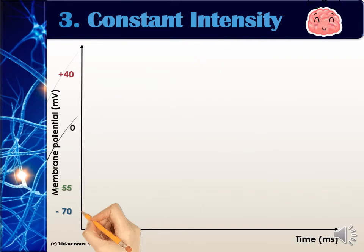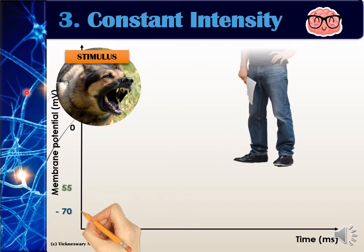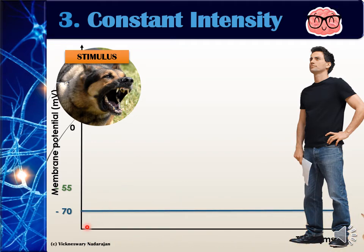Let's move to the third characteristic: that the potentials for an impulse are constant. Let's take the dog barking as a stimulus. If you don't notice the dog barking, that means there is no stimulus and your resting potential will maintain at negative 70 millivolts. It won't fluctuate and go down to negative 90 or up to negative 64 — it will stay and maintain at negative 70. That's what we mean by constant.